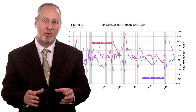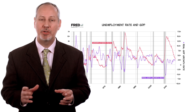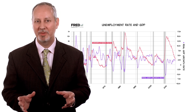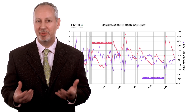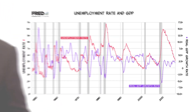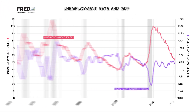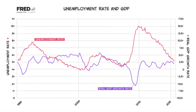Although unemployment is clearly correlated with the business cycle, the exact reasons why are debated by economists. Notice, for example, that unemployment typically spikes quickly when growth declines, but then it returns to more normal levels only slowly.